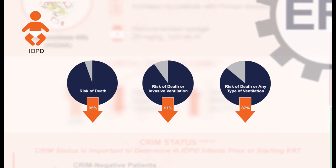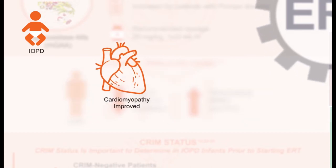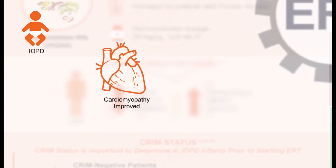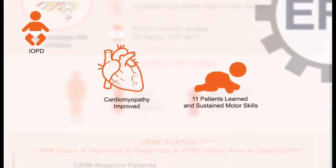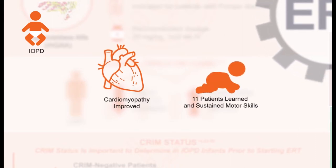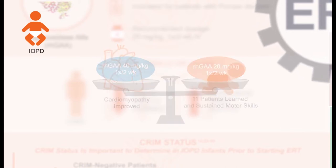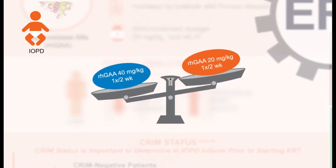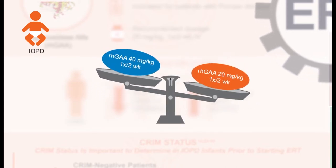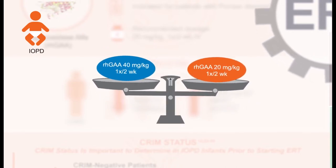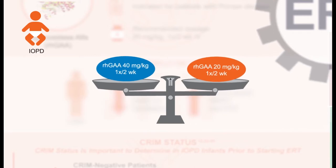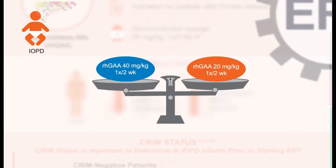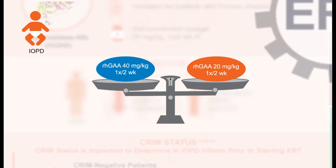Those who had cardiomyopathy continued to improve. Eleven of the 16 patients learned and sustained substantial motor skills. It was again demonstrated that there was no significant difference in either safety or efficacy parameters between 20 mg/kg and 40 mg/kg every other week.